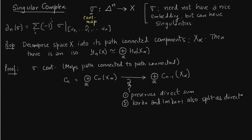Because there is a split, chain complexes behave precisely as they do in simplicial complexes. The homology groups also split because the kernel and image are splitting. That is the essence of computing homology.